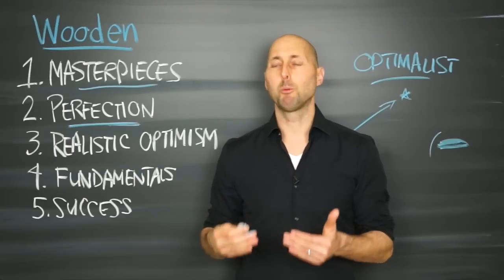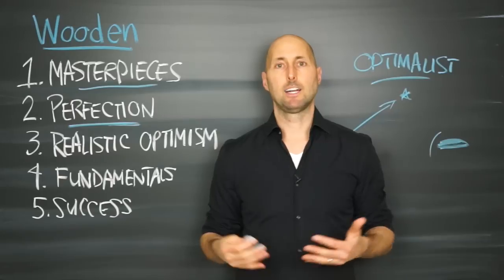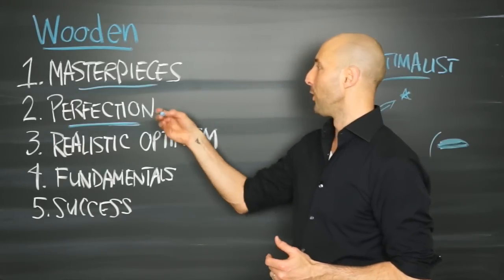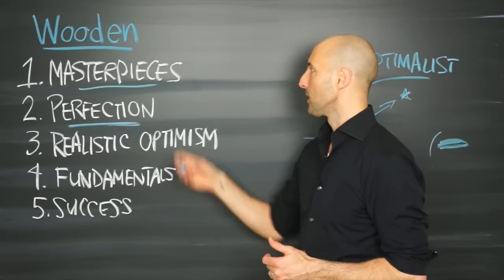Abraham Maslow says there are no perfect human beings. I like to joke, I hate to break it to you, but you're not going to be the first one. So let's get over ourselves. Go for perfection. Know we're not going to hit it. Create a masterpiece.